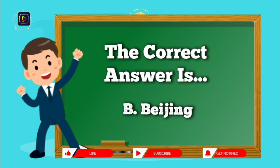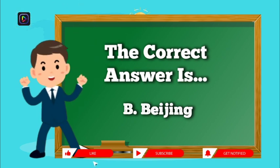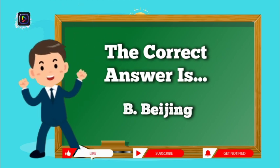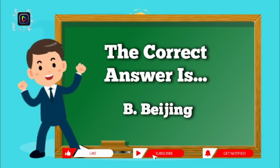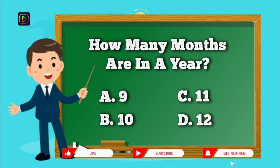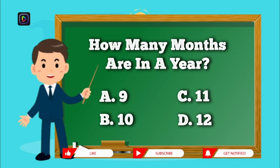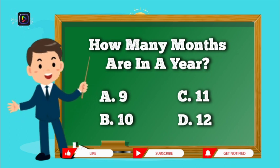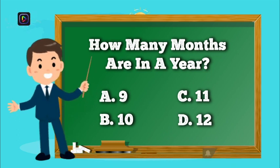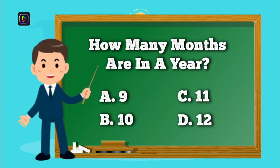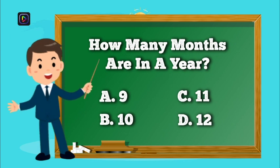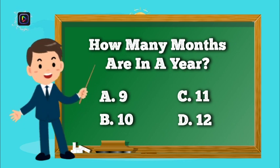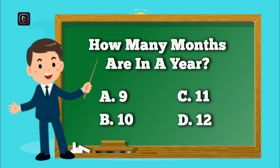The correct answer is B, Beijing. Question number 6. How many months are in a year? Is it A, 9? B, 10? C, 11? Or D, 12?